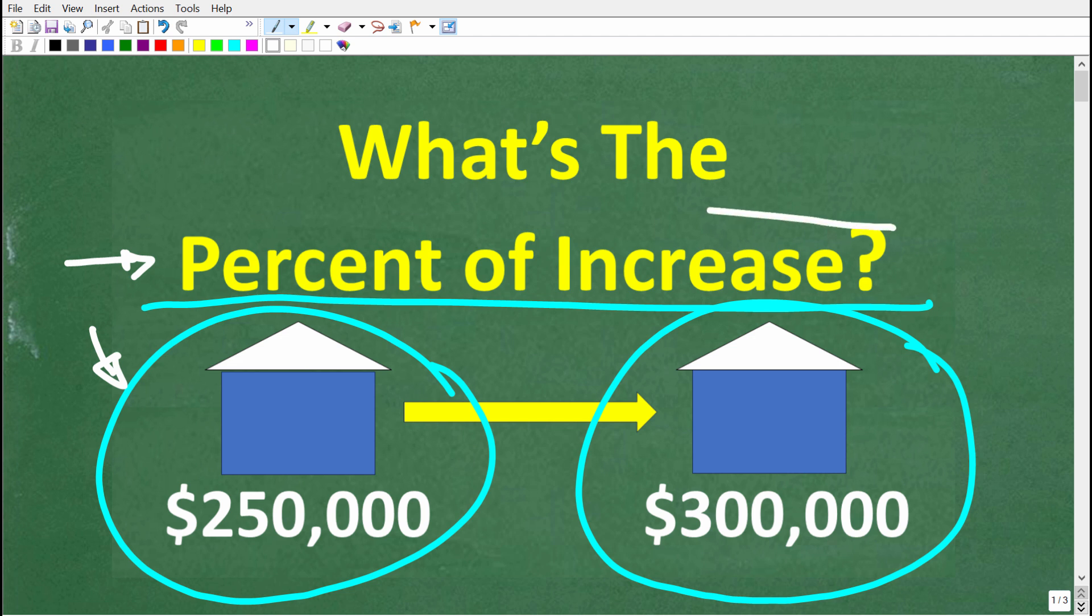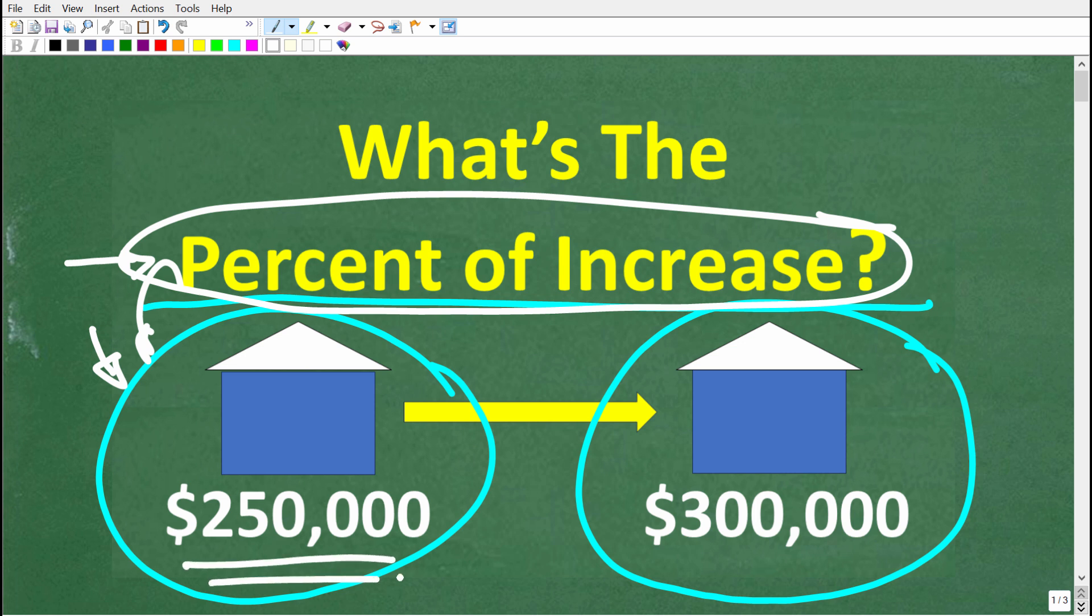Alright, so one more time, we're trying to determine the percent of increase on the original price. So we have a home that went from $250,000 to $300,000 in value. Alright, so let's go ahead and take a look at the correct solution.